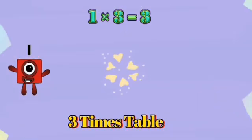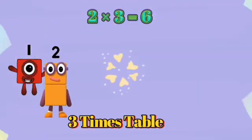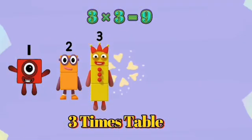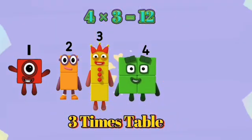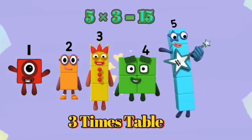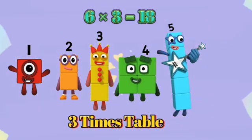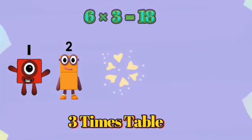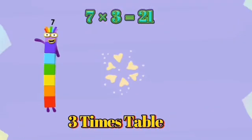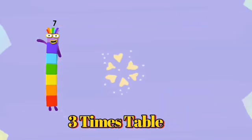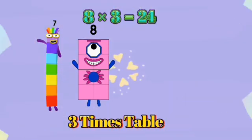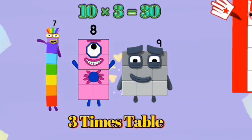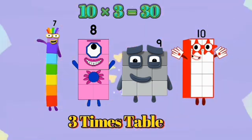1 times 3 is 3. 2 times 3 is 6. 3 times 3 is 9. 4 times 3 is 12. 5 times 3 is 15. 6 times 3 is 18. 7 times 3 is 21. 8 times 3 is 24. 9 times 3 is 27. 10 times 3 is 30.